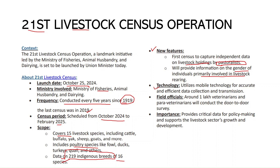Technology was introduced in this livestock census — mobile technology will be used for efficient data collection and transmission. Around 1 lakh veterinarians and para-veterinarians will conduct door-to-door surveys. It provides critical data for policy making, supports the livestock sector's growth, and helps identify beneficiaries. That concludes the first part of October current affairs.